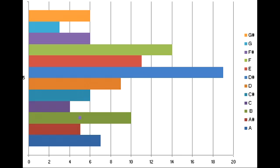Now I'm going to talk about the most common scales I found in my 100 electronic songs. The most common one was D sharp, then there was F, then E, and lastly B.